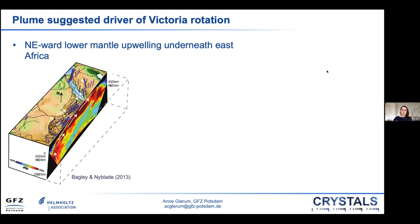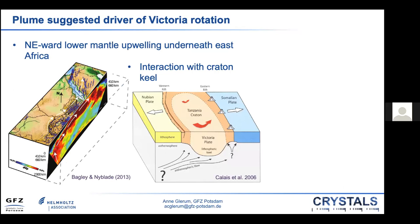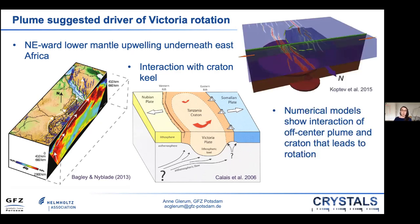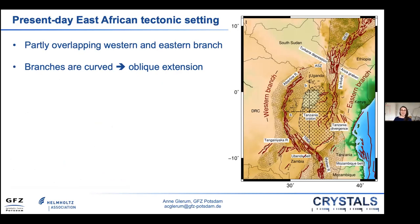Previous authors have suggested a mantle driver for the rotation of Victoria. From seismic tomography and isotope studies we know there is a northeast-directed mantle upwelling beneath southeast Africa, and the Victoria microplate encompasses the Tanzania Craton — an Archean craton with a keel possibly thickest in the south. Kaledo suggested that asthenospheric flow interacting with the craton keel could produce the counterclockwise motion, and Coptev et al. noted a counterclockwise rotation in 3D numerical models of an off-center plume interacting with a cratonic block.